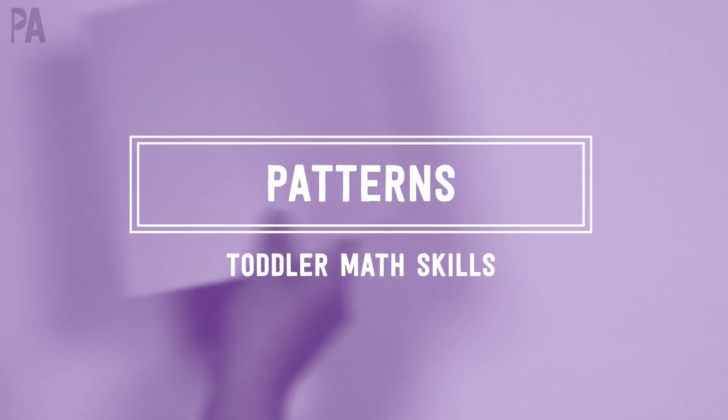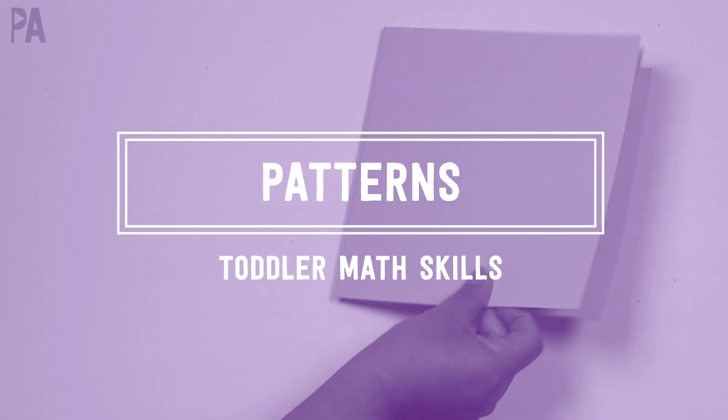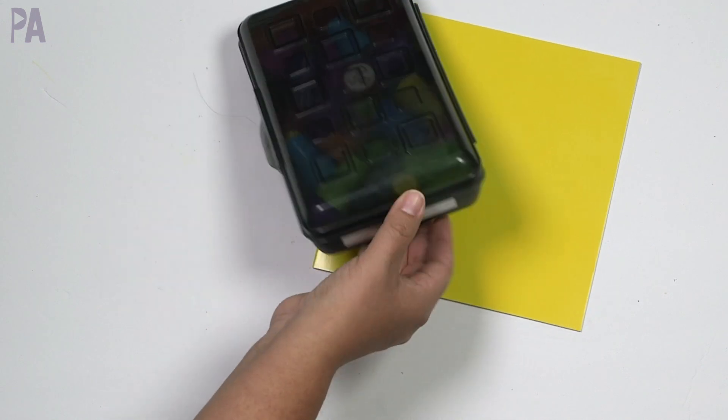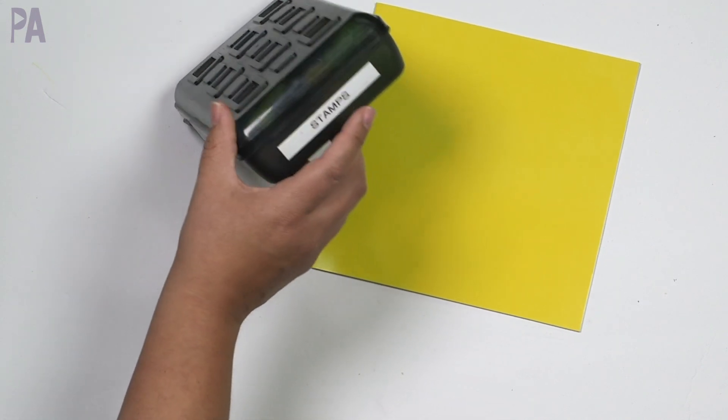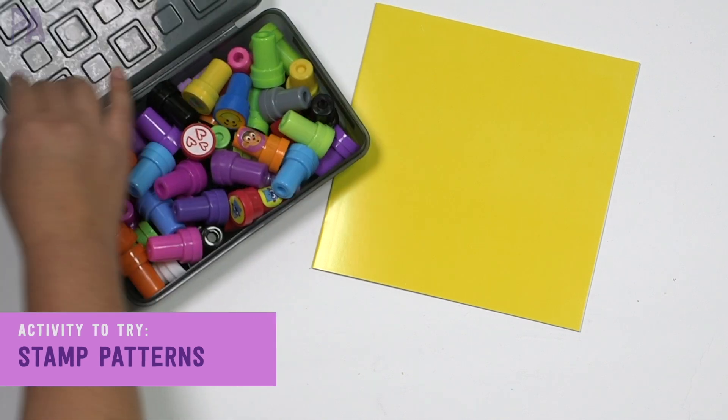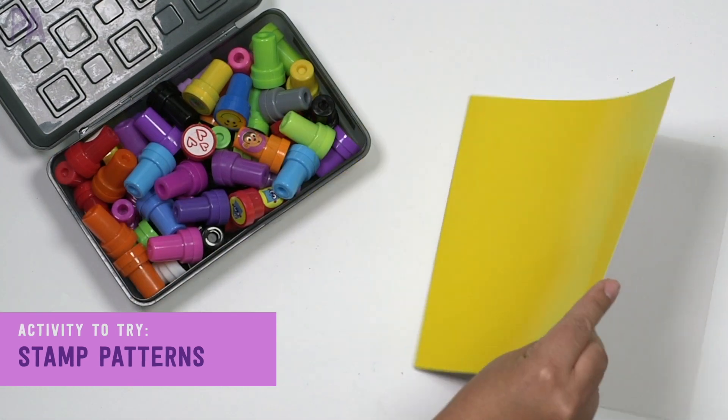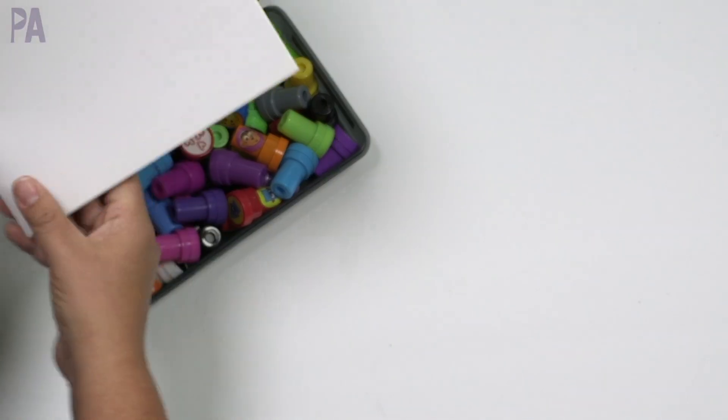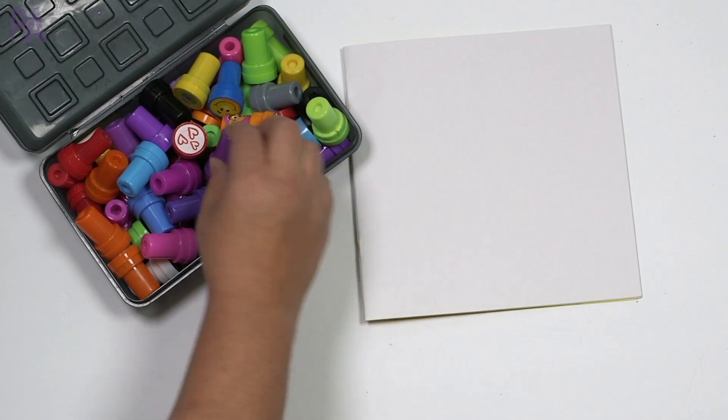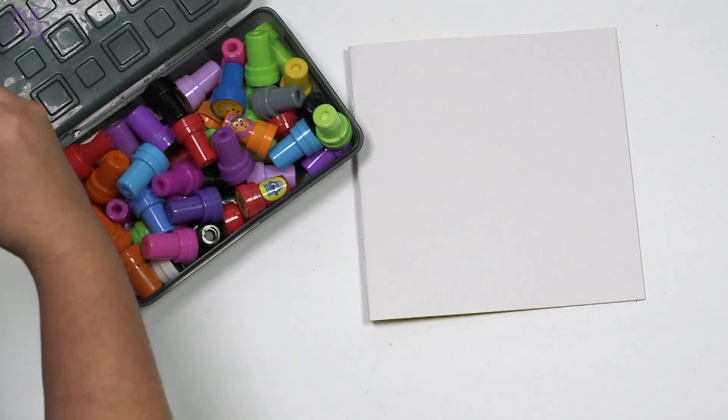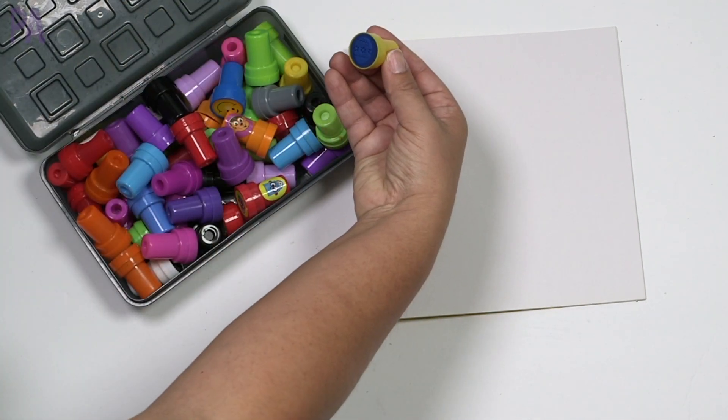The next early math skill that I would recommend working on would be patterns. Patterns can be done so many different ways too. What I like to do, because I think it's a really fun hands-on way, is to use some stamps. I've got my whole collection here of the self-inking stamps. You can find these at Dollar Tree all the time, or you can use some other rubber stamps that you might have and just some paper. Find stamps that they like, like there's a robot, there's hearts, got an Easter egg over here, skeleton. When you do these, you just make a pattern.